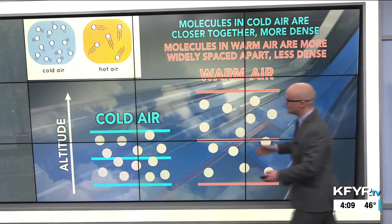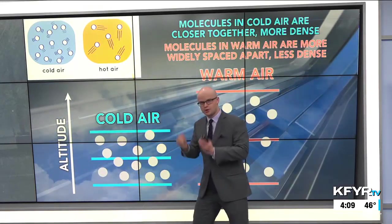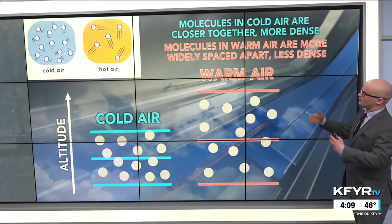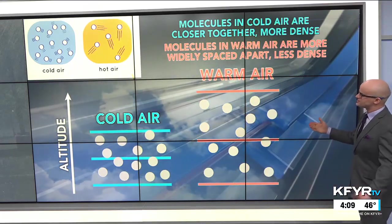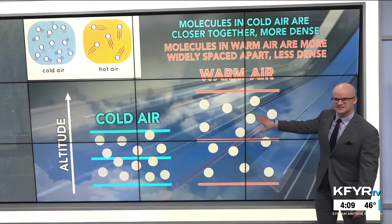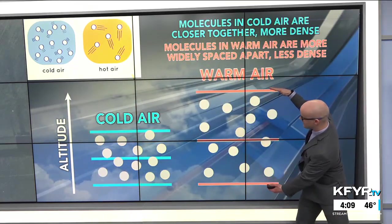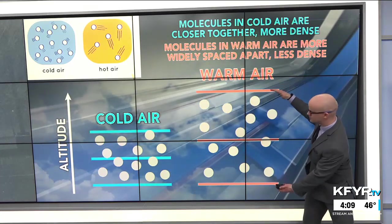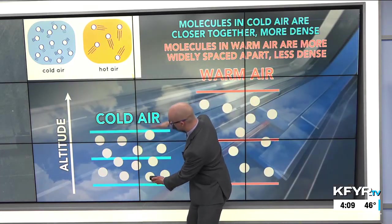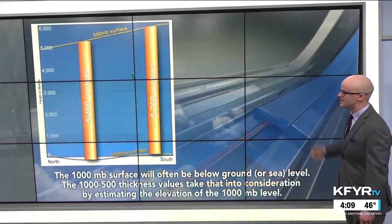In cold air, the thickness is going to be small between those two pressure surfaces, versus with warm air, the thickness is a lot larger. That's because of the density of air. With cold air, the molecules are a lot more closely packed together, whereas with warm air, the molecules are more widely spaced apart. They're moving around a lot faster, so the air is less dense with warm air — therefore it takes up more space. The thickness is larger with warm air, and everything is squeezed down a bit more with cold air in place.